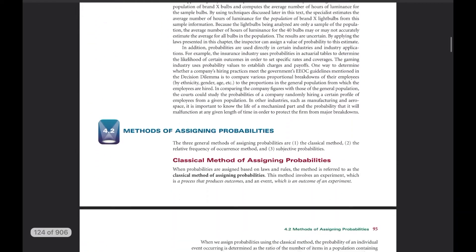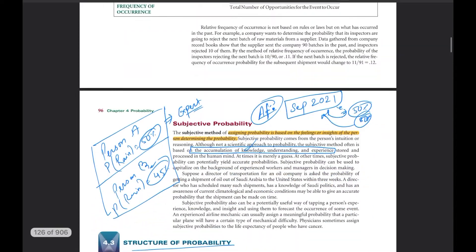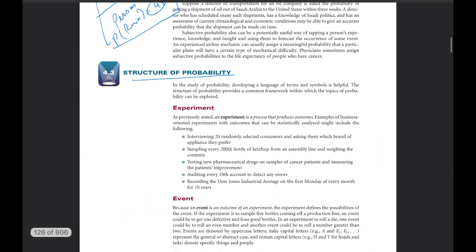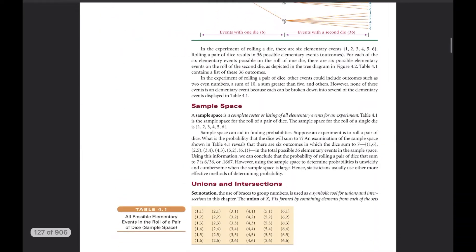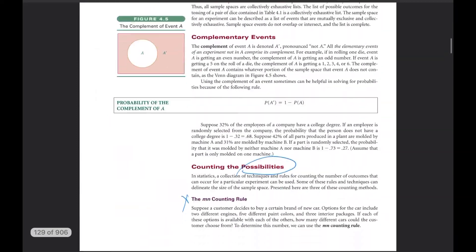We also looked into the difference between a population parameter and a sample statistic. Then we calculated certain probabilities by looking at the structure of probability — what is an experiment, what is an event, what is the sample space, some trees, and all those things.